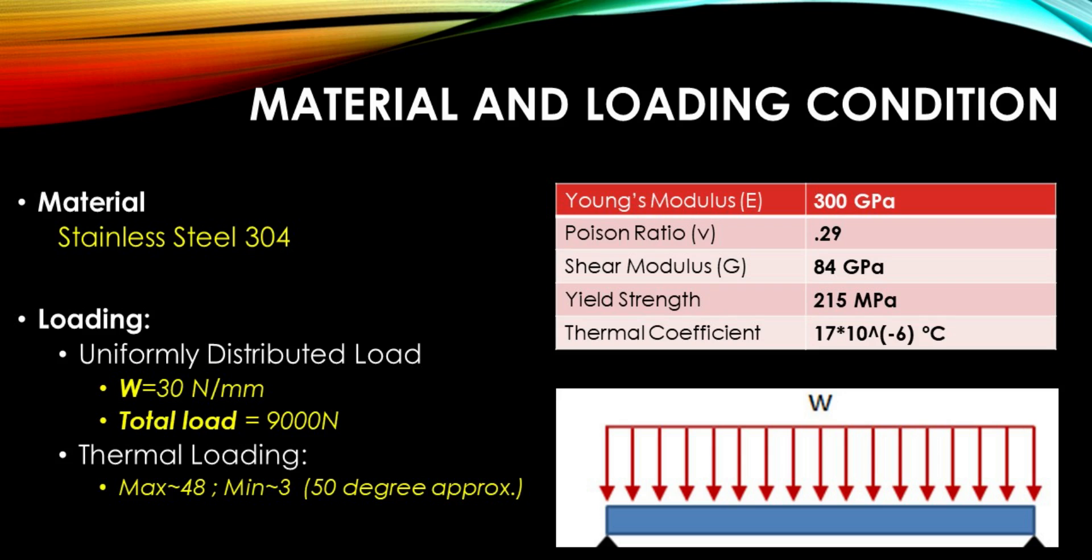We are assuming that the beam is installed, or in the beginning, at 3 degrees Celsius. From this initial condition, beam temperature increases to 48 degrees Celsius. This increase in temperature will try to expand our beam, which will cause thermal stress or strain depending upon the boundary condition.